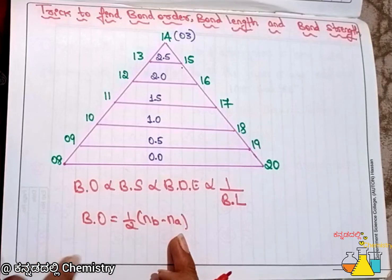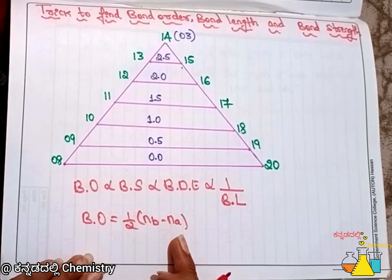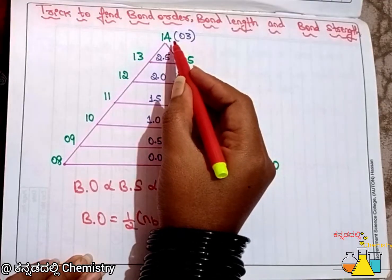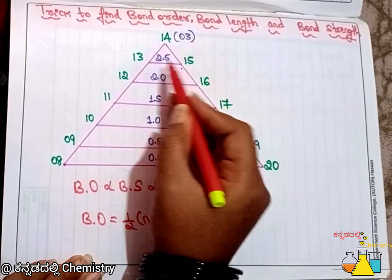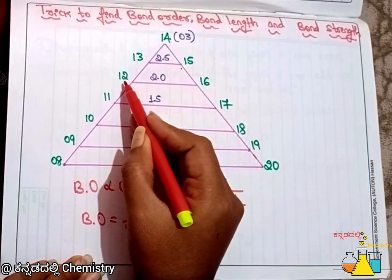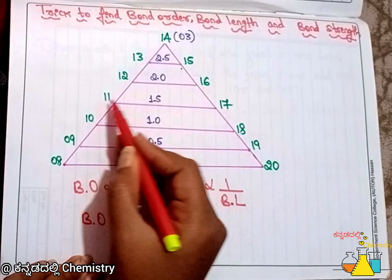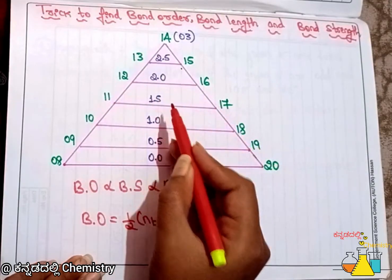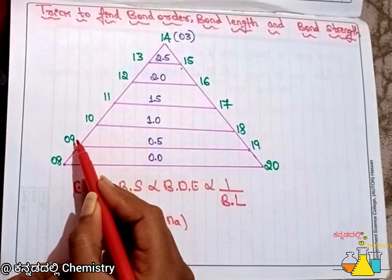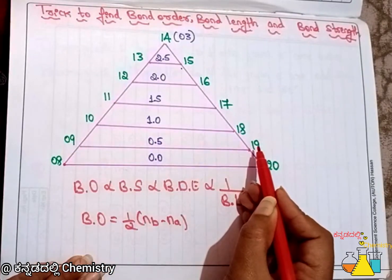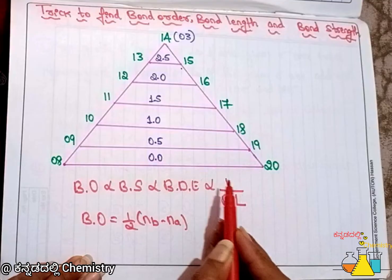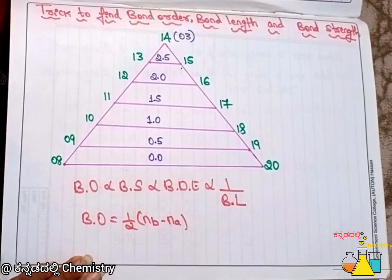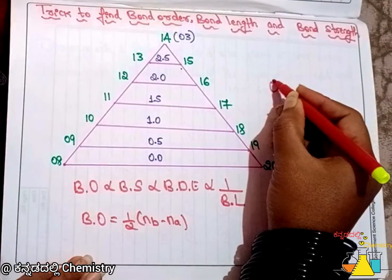Using the bond order formula: 14 gives 3, 13 gives 2.5, 12 gives 2, 11 gives 1.5, 10 gives 1, 9 gives 0.5, and 8 gives 0.